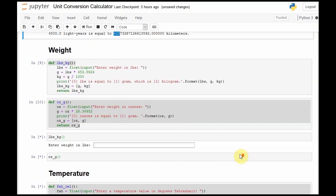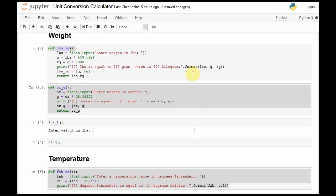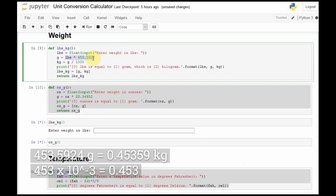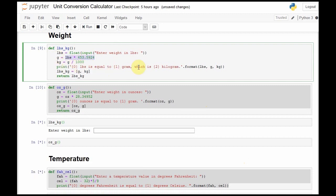With weight, if we received a weight value from the user, converted it to float, then that value in pounds that we receive from the user, if multiplied by 453.5924, that gives us a gram value, which can be divided by 1,000 to give us a kilogram. And formatted string as the output with our three values, and returning a list with the two.